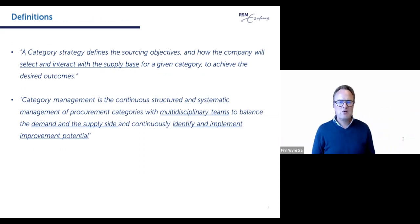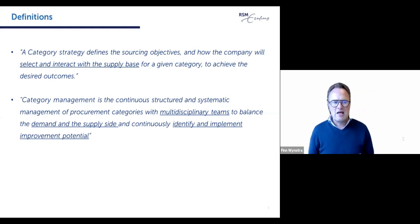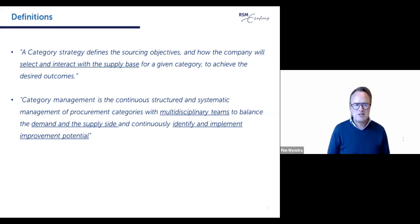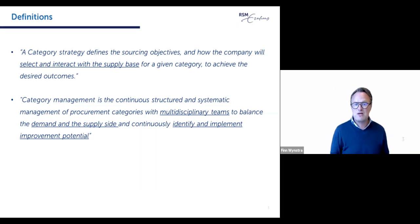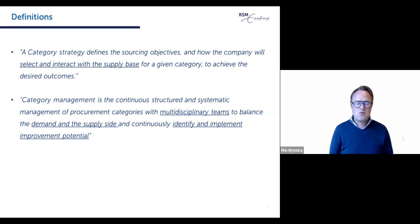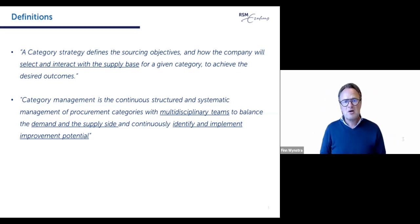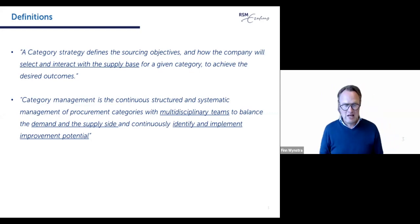Let me give you one or two definitions on category sourcing strategies. The category strategy defines the sourcing objectives and the way a company or any organization will select and interact with the given supply base for that particular category to achieve certain outcomes, whether related to innovation, cost savings, quality, etc. In essence, it is a continuous process where not just the purchasing department, but also other functions such as marketing, R&D, and production collaborate to continuously identify and implement improvement actions.